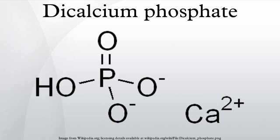Dicalcium phosphate is mainly used as a dietary supplement in prepared breakfast cereals, dog treats, enriched flour, and noodle products. It is also used as a tableting agent in some pharmaceutical preparations, including some products meant to eliminate body odor. Dicalcium phosphate is also found in some dietary calcium supplements, is used in poultry feed, and is used in some toothpastes as a tartar control agent.